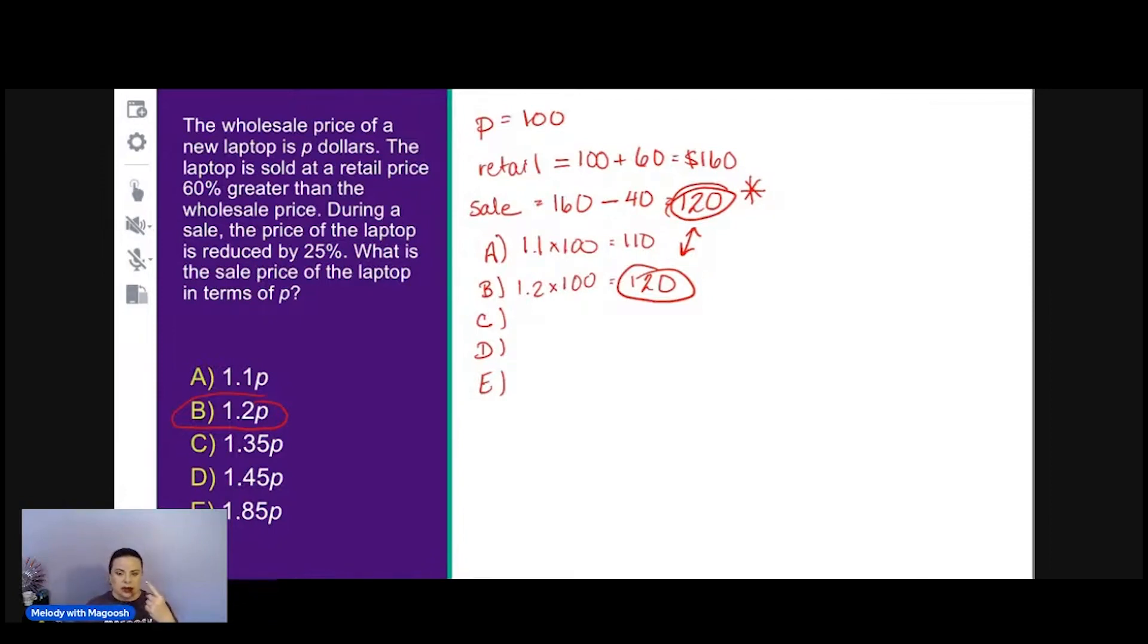So what we do: step one, we picked out a number that would be a good, easy choice to work with. Step two, we solve the question using our plugged in number. Step three, we use the process of elimination and plug that number into the answer choices. We didn't need to get to step four because we were already down to one answer choice.